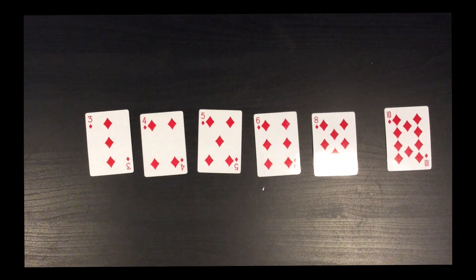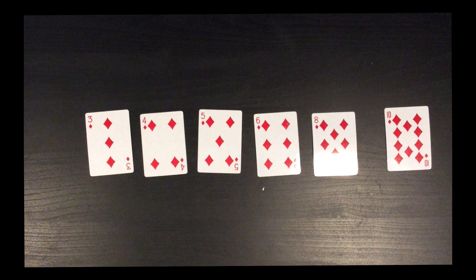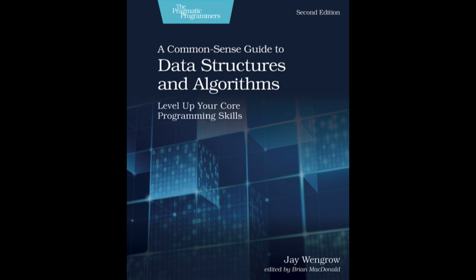And that is the insertion sort algorithm. The computer doesn't even have to know that its goal is to sort cards. The whole idea of the algorithm is that when the computer follows these literal set of instructions, by the time it's done, our goal will have been accomplished. To learn about this algorithm and many others and how these algorithms and data structures will affect the speed and efficiency of the code you write every day, I invite you to check out A Common Sense Guide to Data Structures and Algorithms Second Edition.